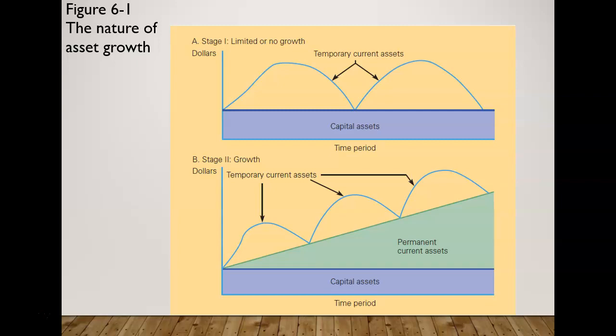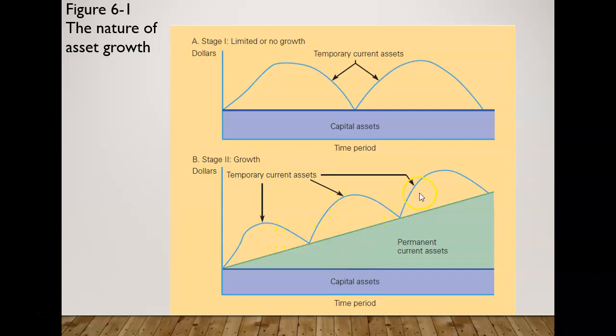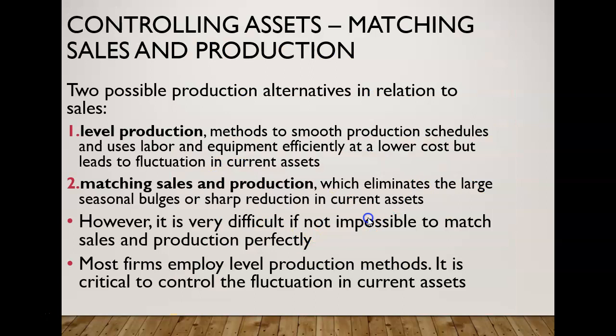Here is a graphical view. In stage one — limited or no growth — you have capital assets with temporary current assets fluctuating up and down above them. In stage two, with growth, you still have capital assets, but now there is growth occurring in permanent current assets, and on top of that you have the ups and downs normally seen with temporary current assets.